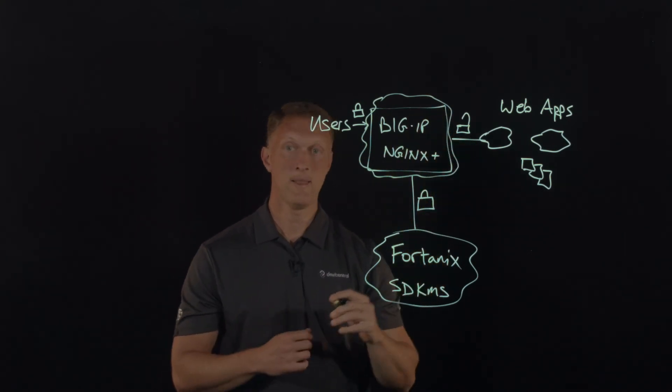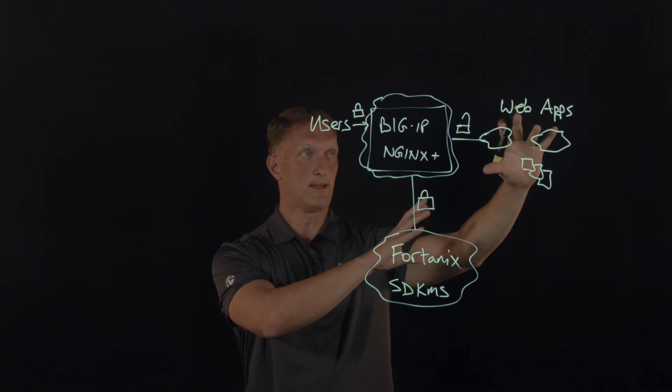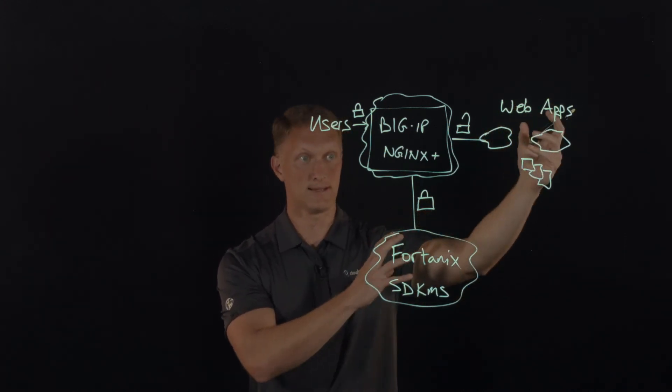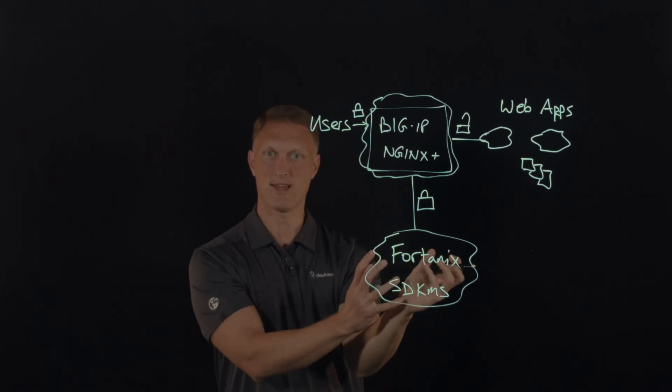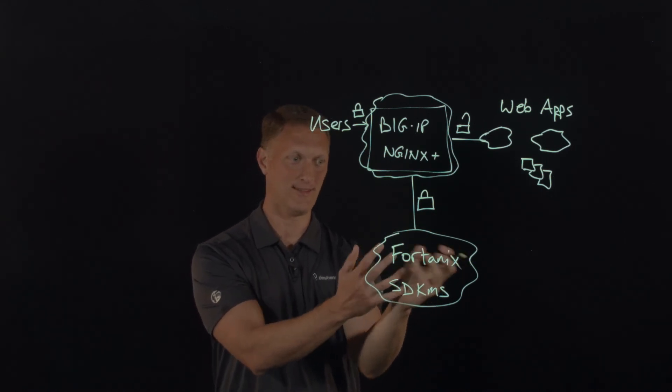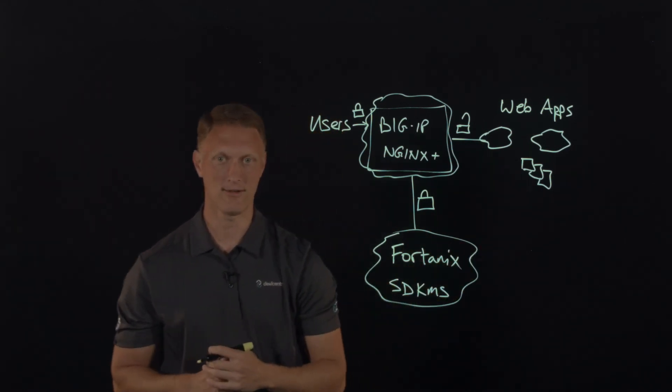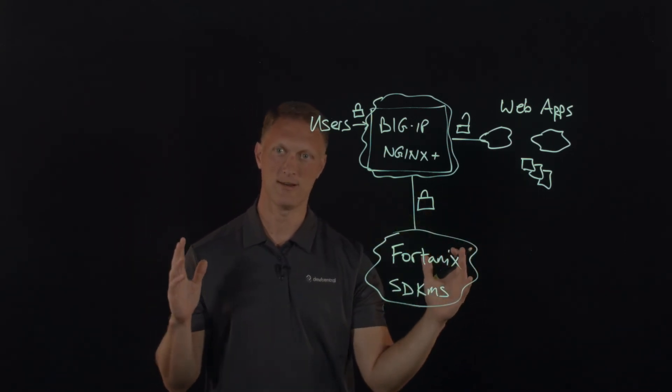Same thing with NGINX plus. You could have your web applications on-prem or in the cloud. It doesn't matter. In fact, Big IP or NGINX plus could be sitting next to the Fortanix instance in the cloud that Fortanix is installed on. So there's a whole ton of different options here. But nonetheless, it is cloud agnostic.